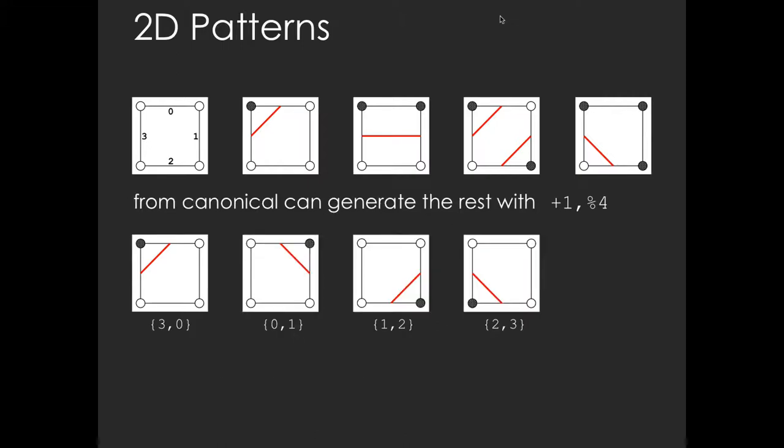The task of generating all 16 configurations is made simpler by the fact that a rotation modulo 4 can generate the related cases for each canonical configuration. This is illustrated here through case 1. Each new pattern can be obtained from the previous one by a simple increment, and the same formula applies to all other cases.